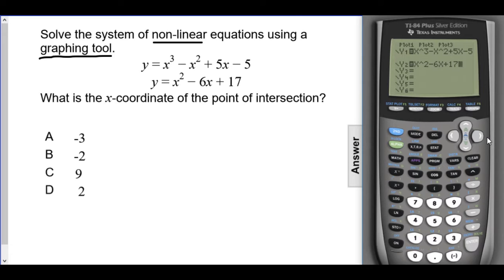Now that both equations are typed in the calculator, I can push graph to see what the system will look like. I can see my system here, and the point of intersection is all the way up here. It's very hard to tell what that point is, so I need the calculator to tell me for sure.